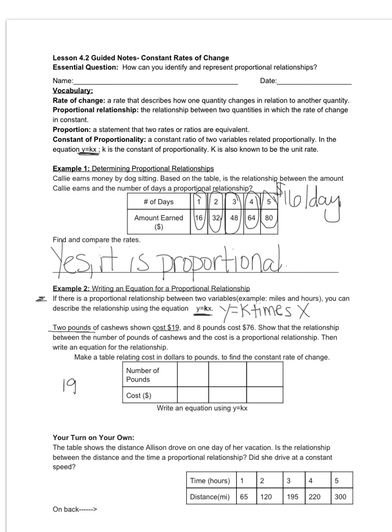So 19 divided by 2 is 9, add a decimal and a 0, bring my decimal point up, and 9.5. So that is my constant of proportionality, or my unit rate. That is for one pound of cashews, $9.50.